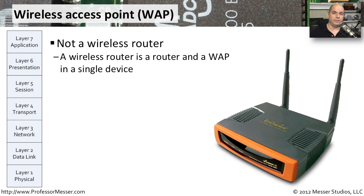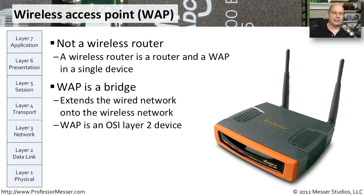A term you'll hear in larger environments is a wireless access point, or WAP. This is different from the wireless router you might have in a SoHo or home office. It looks familiar, but it's not doing routing — it is simply bridging a wired network onto a wireless network. All of this activity occurs at OSI Layer 2, so we're not changing the subnet or routing anything. We're simply extending the wired ethernet network onto a wireless connection.